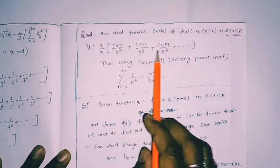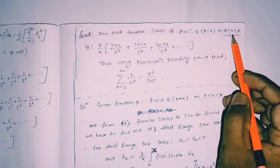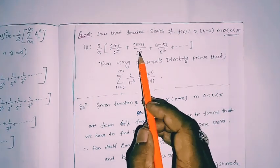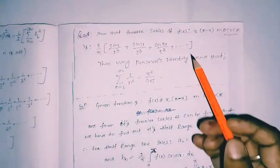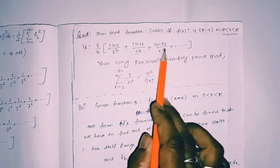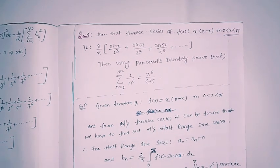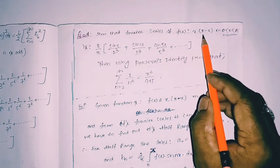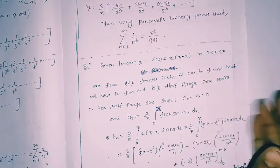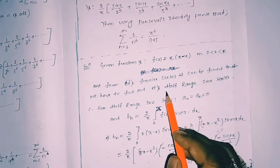From the series one can see that all the terms belong to sine, and the limit is only over half the range — it is not the full range. So indirectly the question asks us to find the half-range sine series of this function. Then, applying Parseval's identity, we have to find the given summation.